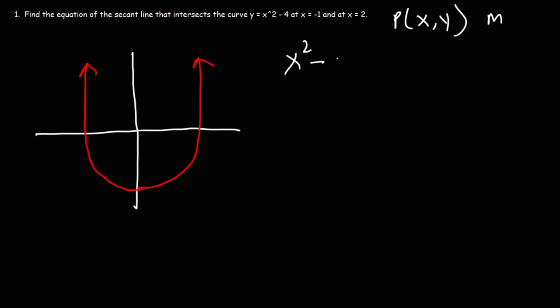Now I'm going to find the x-intercepts. So if we set the function equal to 0, we can factor it using the difference of perfect squares technique. The square root of x squared is x, the square root of 4 is 2, and then one side will be positive, the other side will be negative.